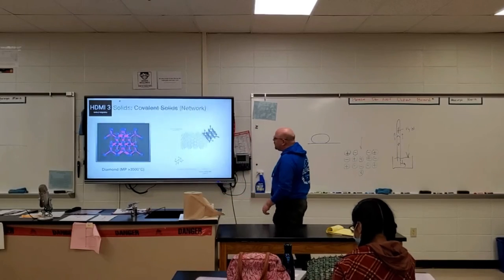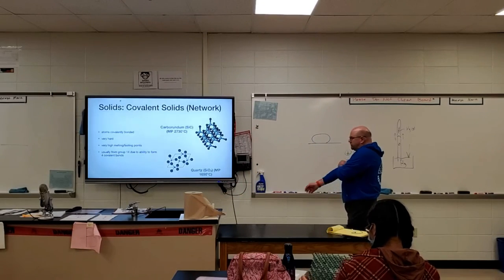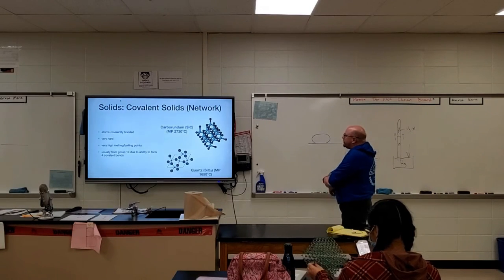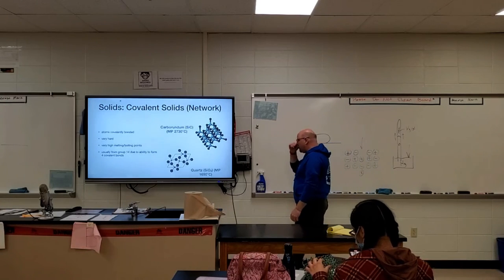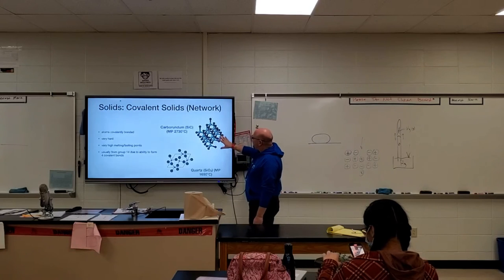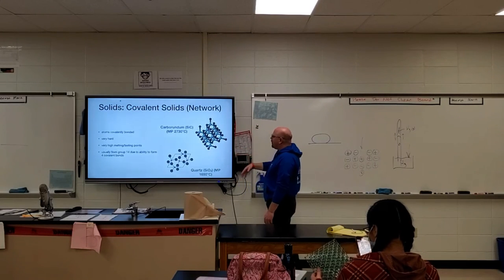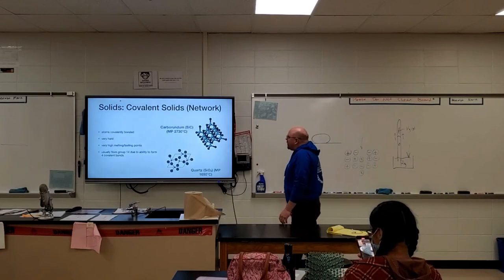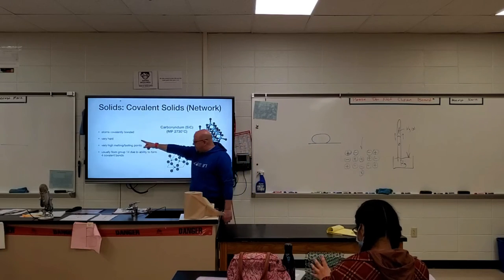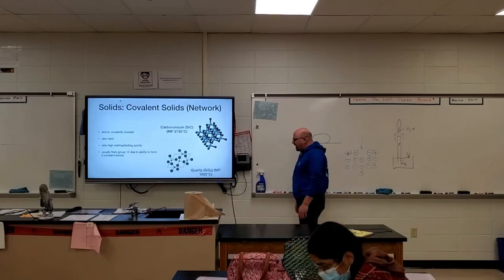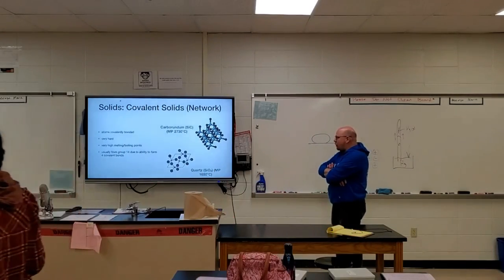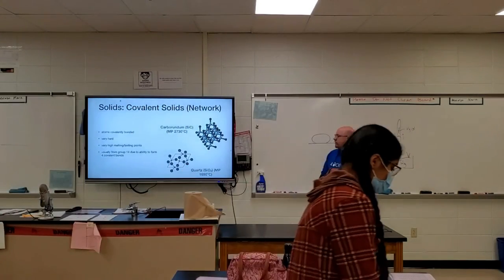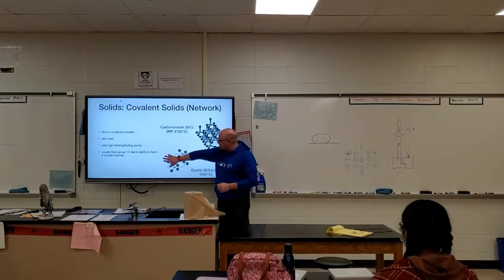Other examples of network covalent solids: carborundum is a cheaper version of a diamond-like substance used in cutting tools — you coat a saw blade or drill bit with carborundum and it cuts through metal much more efficiently for a longer period of time. Network covalent solids tend to be very hard. Quartz — basically sand — is also a network covalent solid; quartz is one of the main ingredients in glass, which is why glass doesn't bend well because the atoms are pretty much stuck in place.